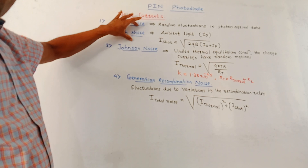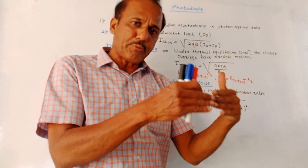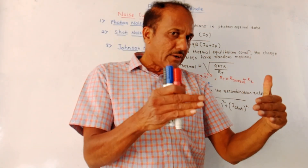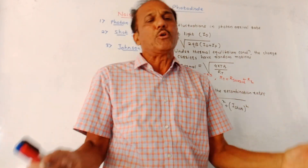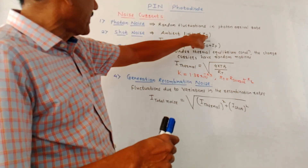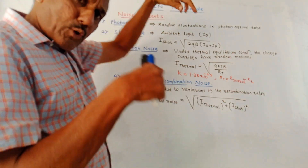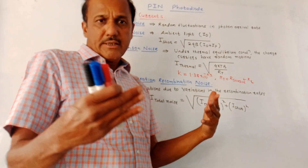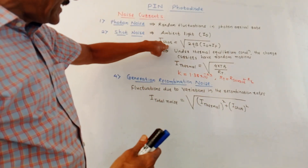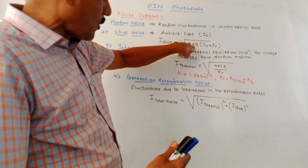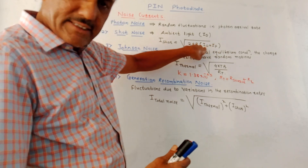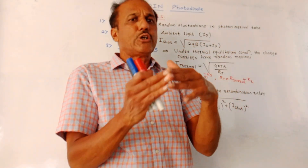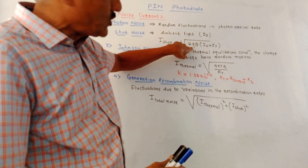The next type of noise is shot noise, related to ambient light. Even if no photons are falling on the photodetector, ambient light still generates a dark current ID at the output. There are fluctuations in this dark current, which represent noise. Shot noise is given by: I_shot = √(2qB(I_D + I_P)), where I_D is the dark current, I_P is the photocurrent generated by incoming photons, B is the bandwidth, and q is the charge of the electron.